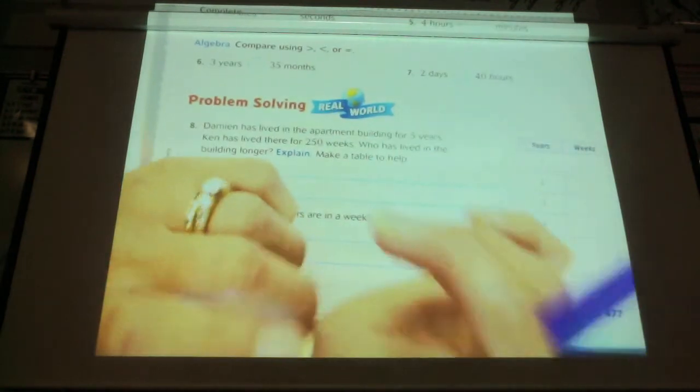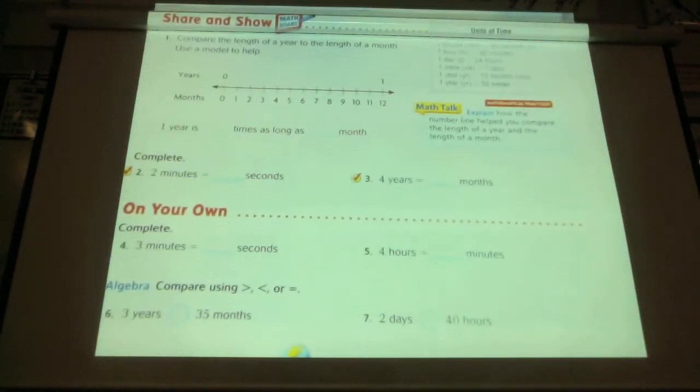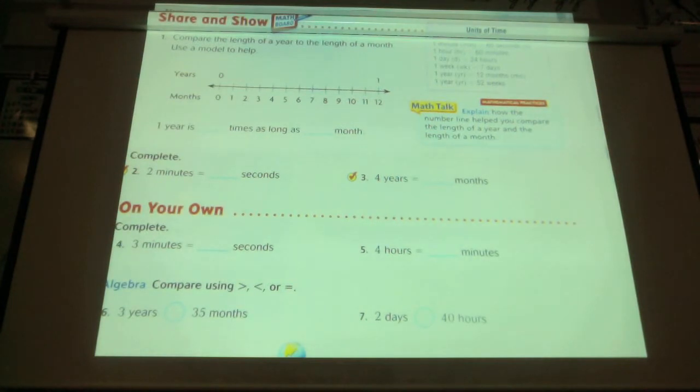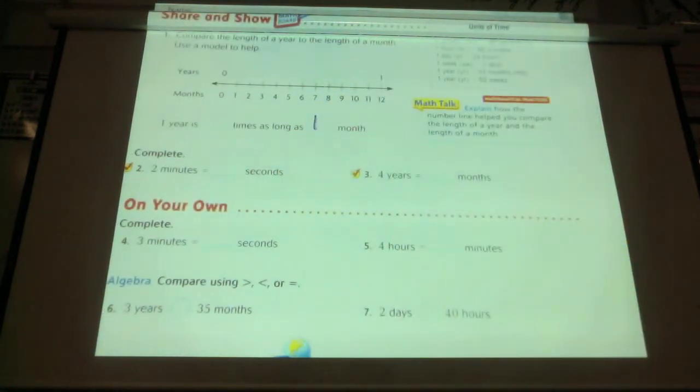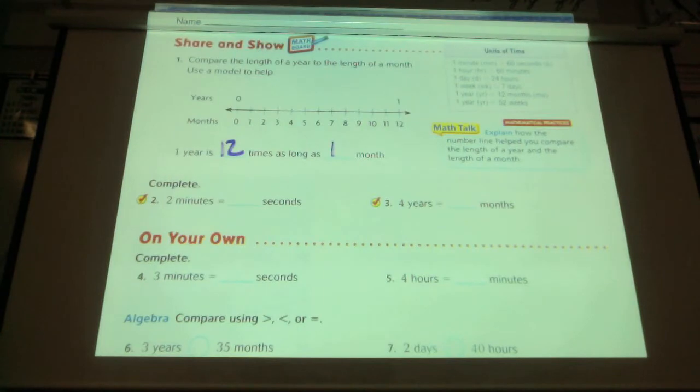Now, we're going to talk about comparing the length of a year to a month. So, one year is how many times as long as one month? A year is how many months? Twelve. Twelve. Not new news to you. Just reminding.